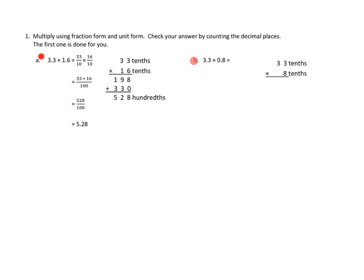The problem here is 3 and 3 tenths times 1 and 6 tenths. They did that a couple of different ways. One is they converted 3 and 3 tenths to 33 tenths — they converted it to unit form. The smallest units are tenths. And then they converted 1.6, or 1 and 6 tenths, to 16 tenths. So they've done this in unit form. That's the same as 33 times 16 over 100 — 10 times 10. So 33 times 16 over 100. They found that 33 times 16 is 528, with 100 in the denominator.